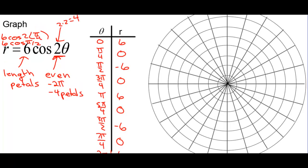Let's start plotting the points. We have 0, 6. Then when we're at pi over 4, we're at 0, so the petal will look something like that. At pi over 2, we're at negative 6. Pi over 2 would be straight up or down, so it loops around down here like that.